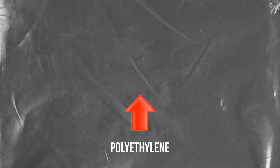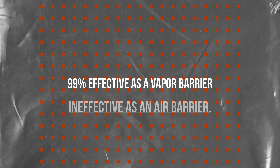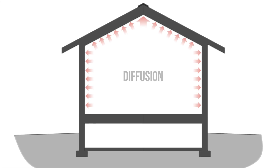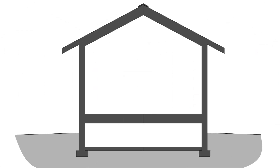Let's say we have a standard polyethylene vapor barrier, and we poke holes through 1% of the surface of that vapor barrier. That vapor barrier is going to be 99% effective, but as an air barrier, it's mostly ineffective. This is because vapor, when it moves through diffusion, acts upon the building evenly as a distributed load, whereas air leaks deposit that moisture in a concentrated load.